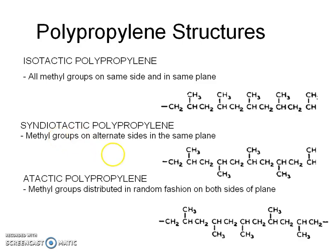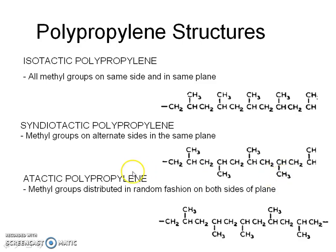In syndiotactic polypropylene, methyl groups are on alternate sides in the polymer plane. As seen in the molecular structure, the first methyl group is on the top side, whereas the second one is on the bottom side, the third on the top side, the fourth on the bottom side, and so on.